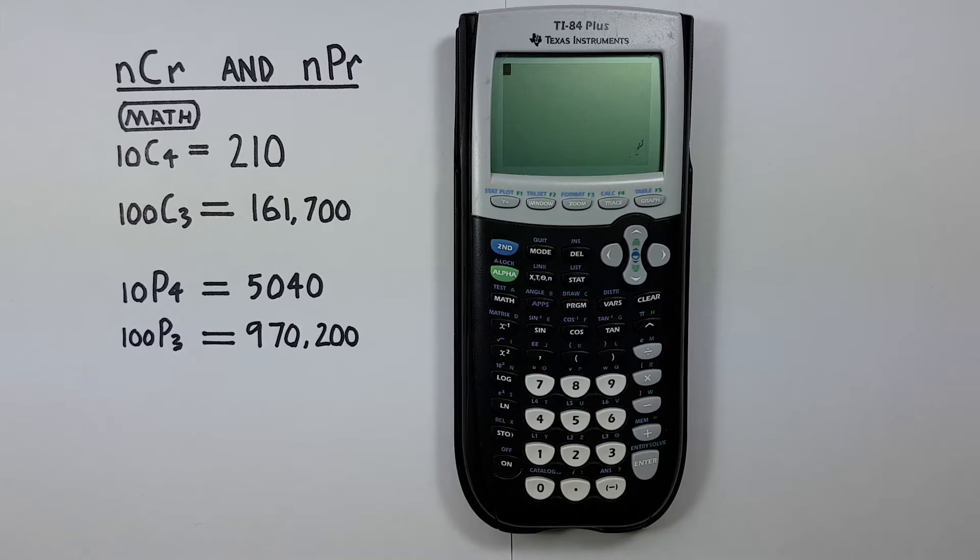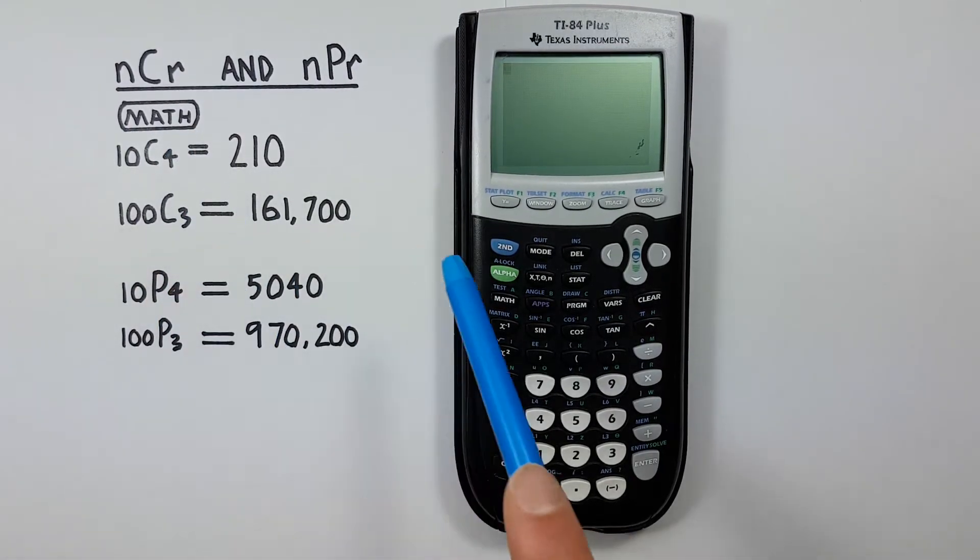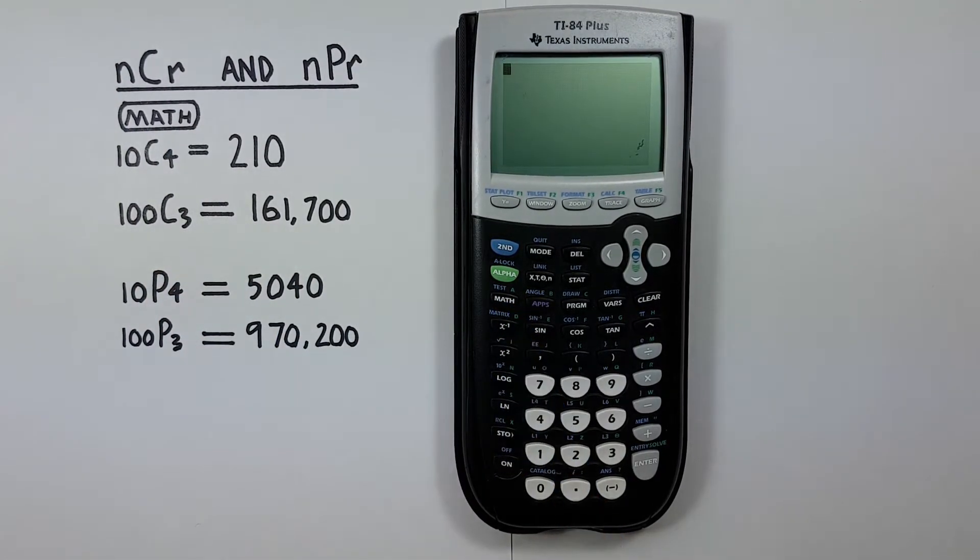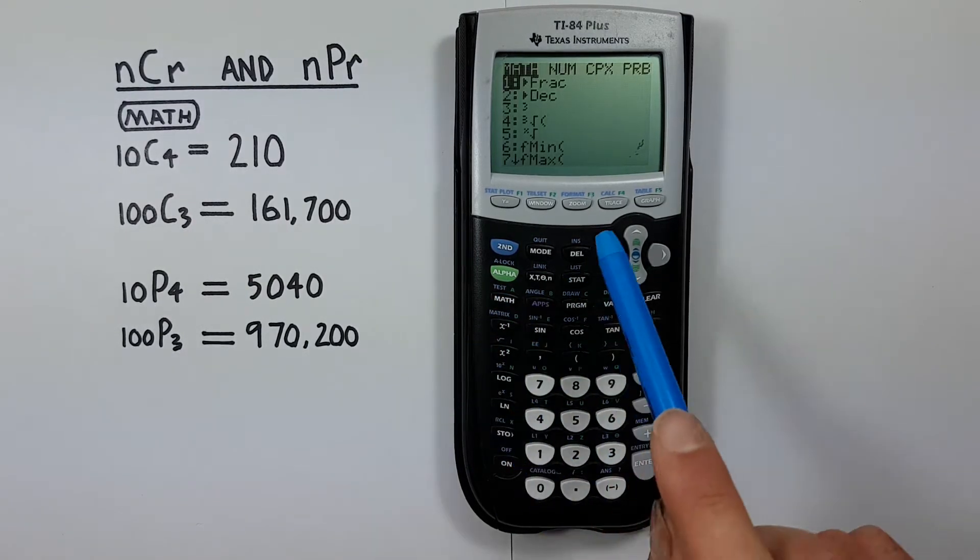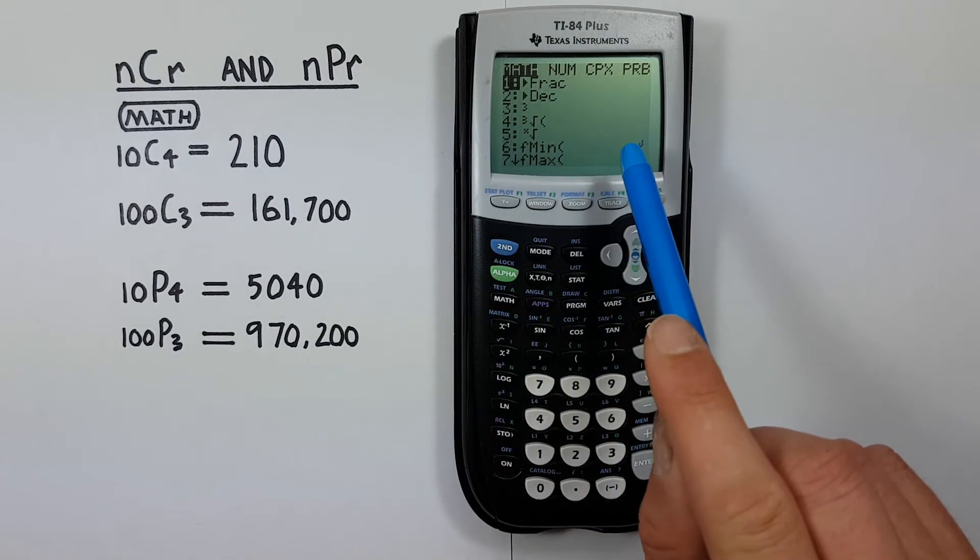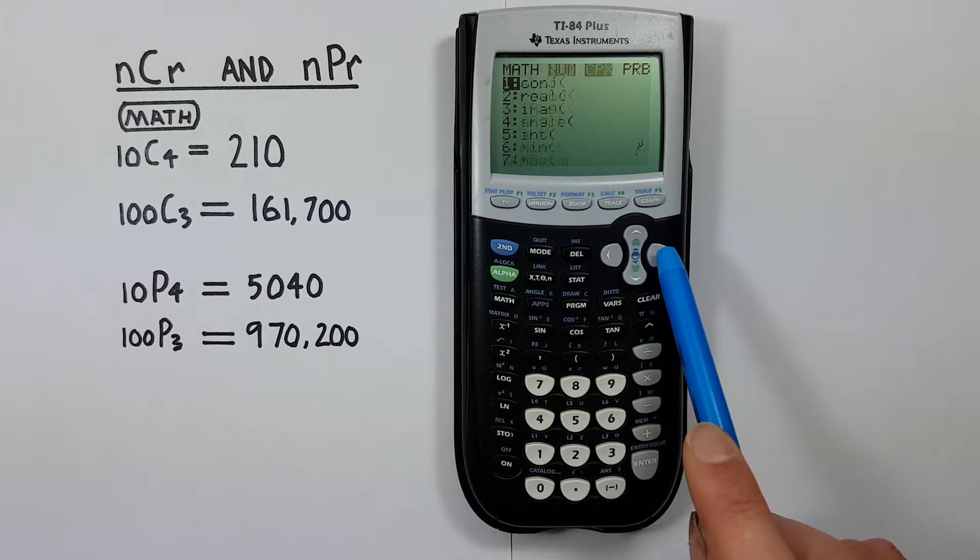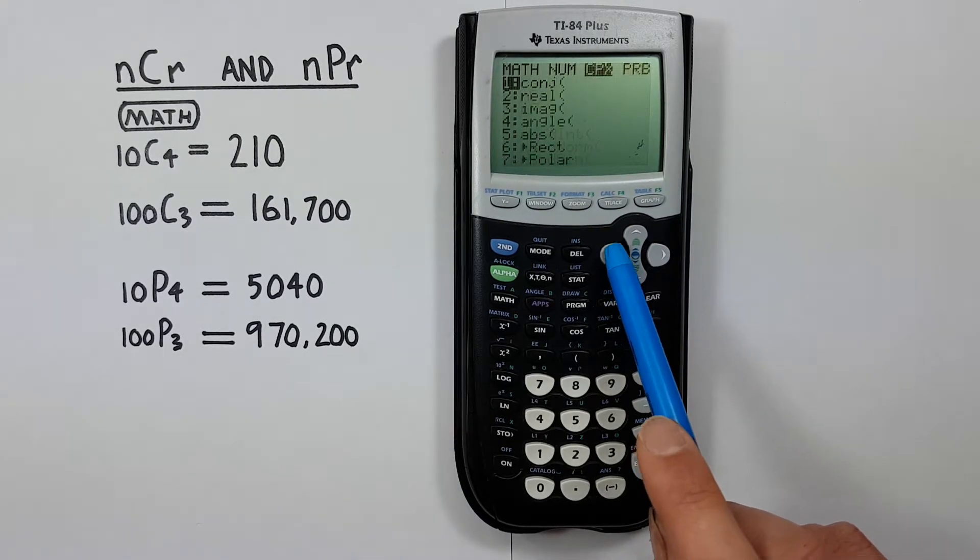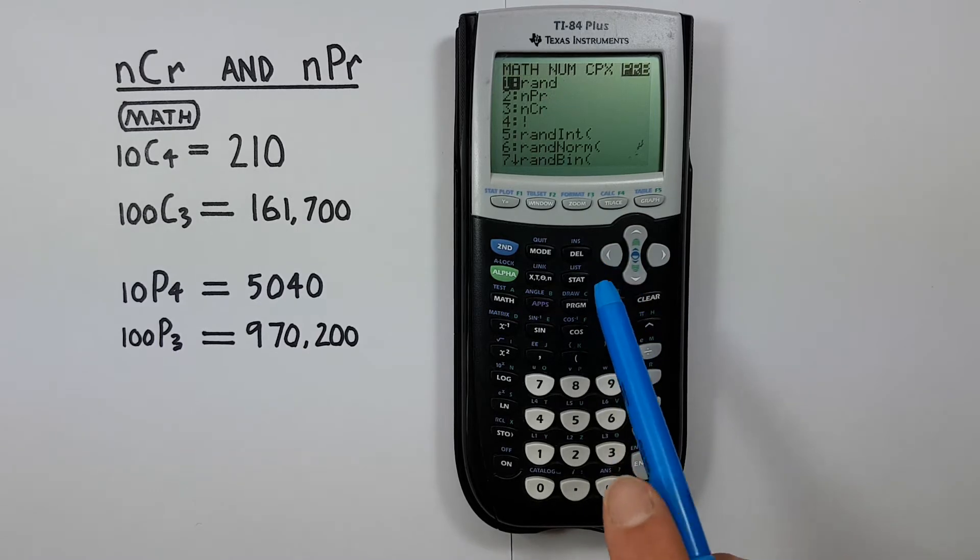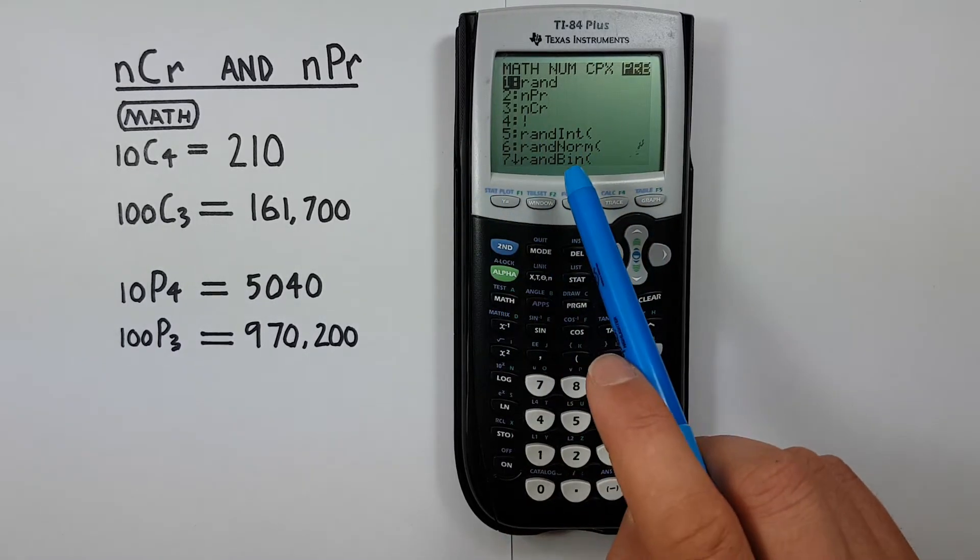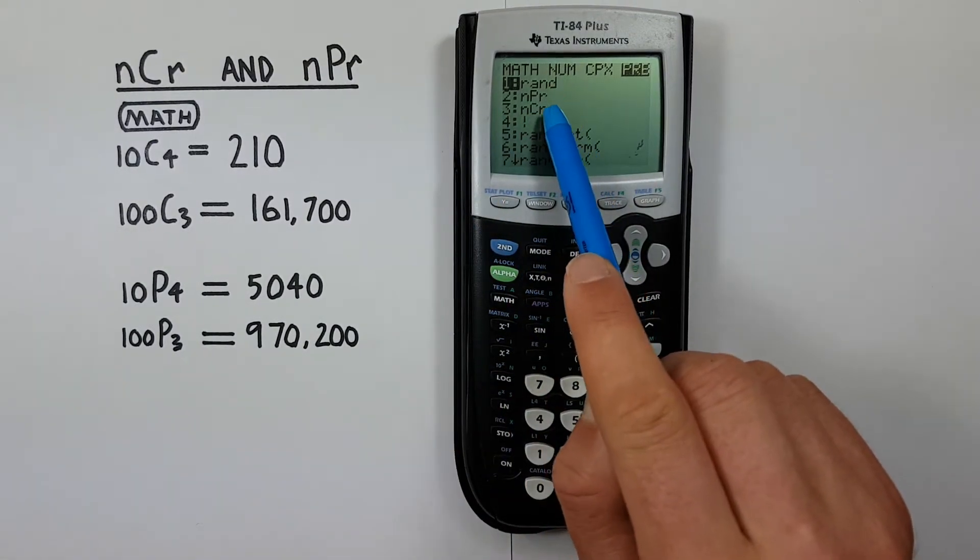To access the combinations and permutations functions we need to use the probability menu which is accessed by the math key, located here. So we press the math key which brings us to this menu, and then we want to go to the PRB or probability menu. We can either scroll right three times or to the left once. We see here number two is permutations and number three is combinations.